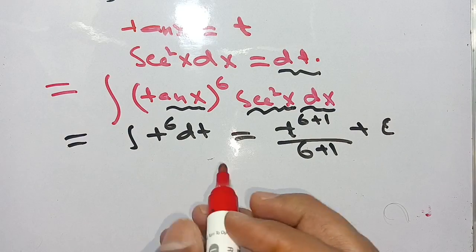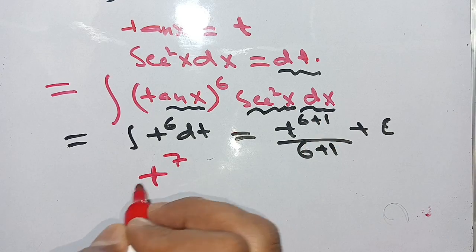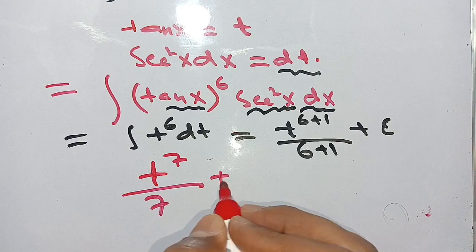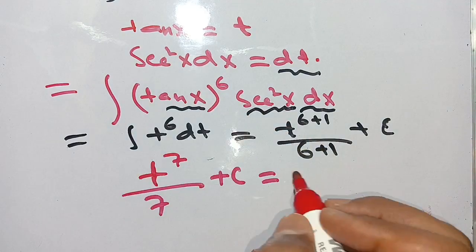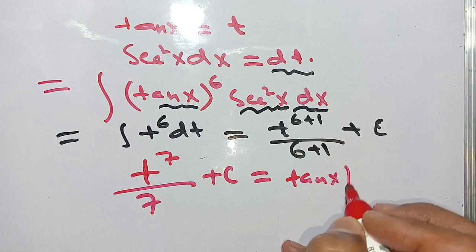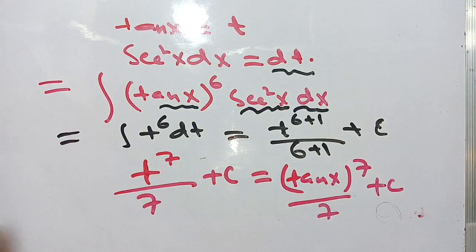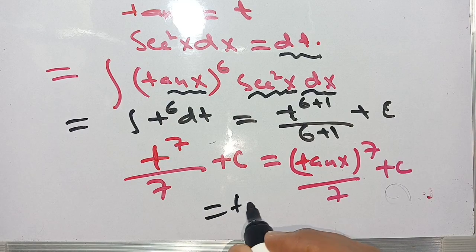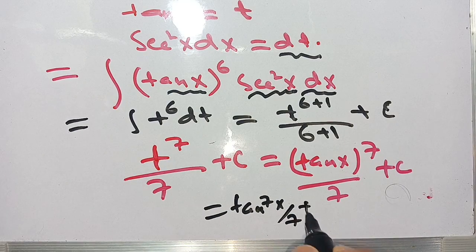In the next step, it becomes t⁷ divided by 7 plus C. In place of t we put tan(x), so it becomes tan⁷(x) divided by 7 plus C, or we can write this as tan⁷(x)/7 + C.